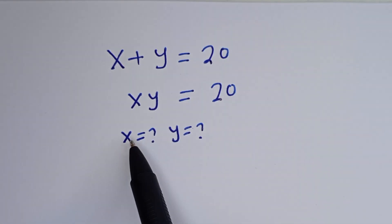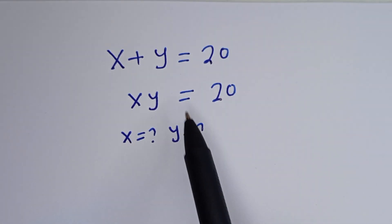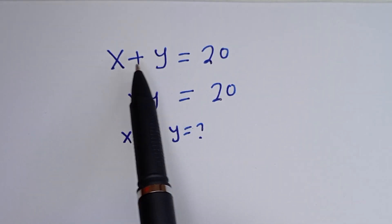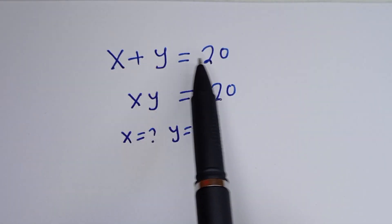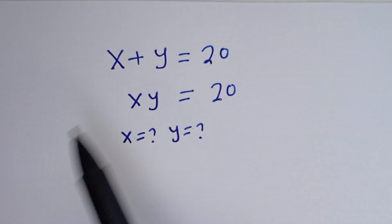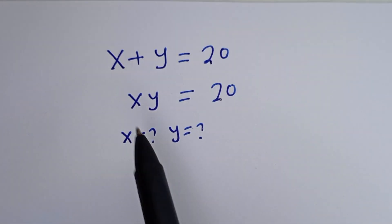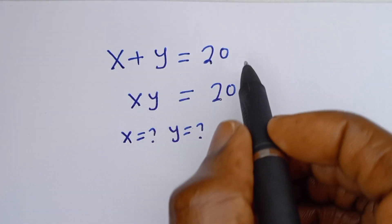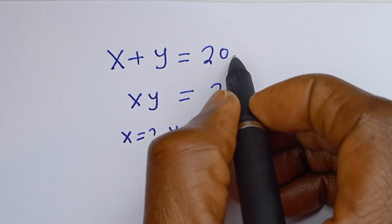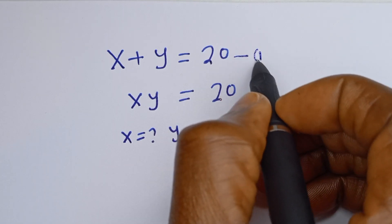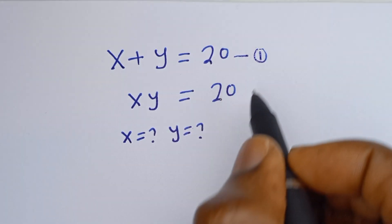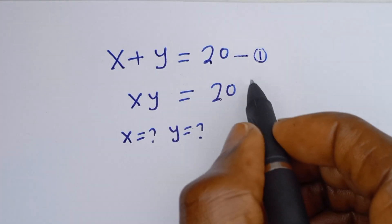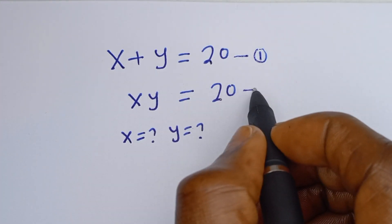Hello, how to solve for S and Y in this algebra equation? S plus Y is equal to 20 — let's call this equation 1. And S times Y is equal to 20 — let's call this equation 2.